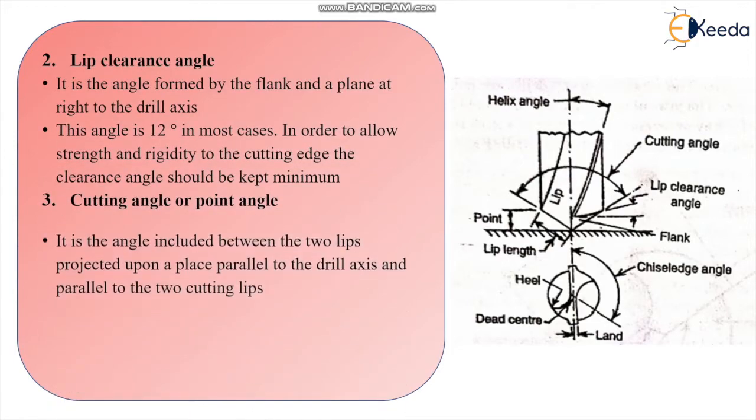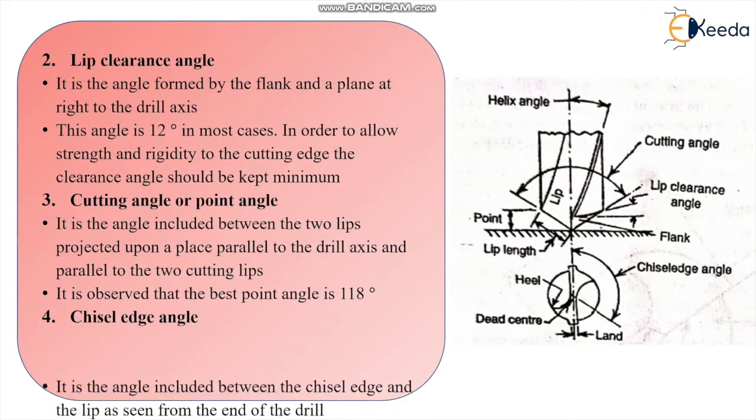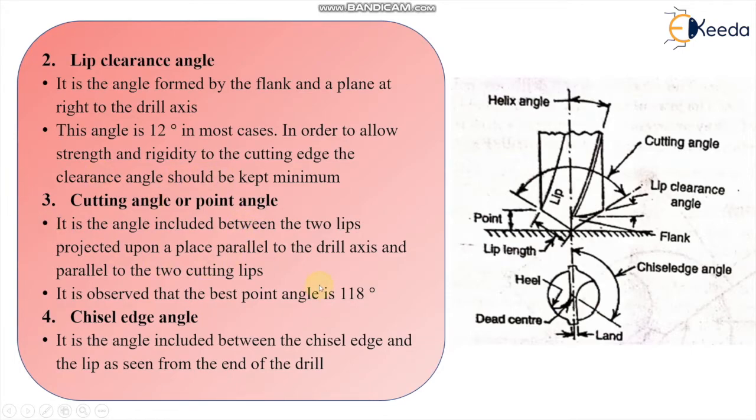Next, we have the lip clearance angle. This is the lip clearance angle shown here. It is the angle formed by the flank and the plane at right to the drill axis. This angle is, in most cases, 12 degrees. In order to allow the strength and rigidity of the cutting edge, the clearance angle should be kept minimum.